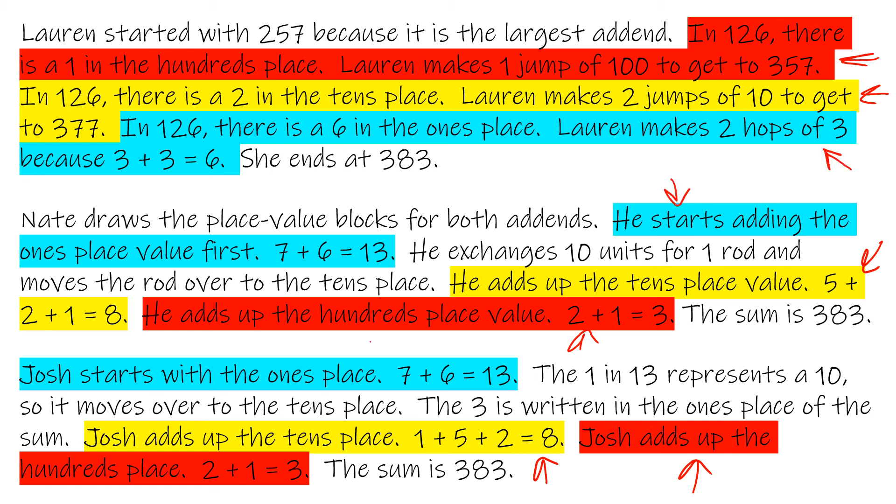And the ones is the blue. Ones and ones and ones. Again, we're adding each place value at a time. It doesn't matter which method you choose to use. You will be adding place value at a time.